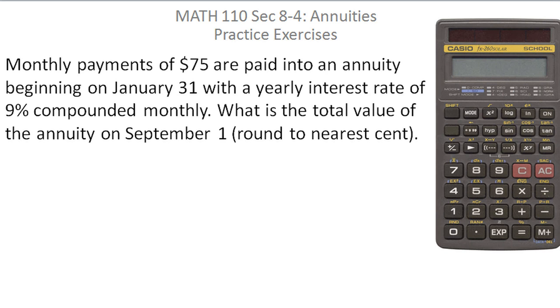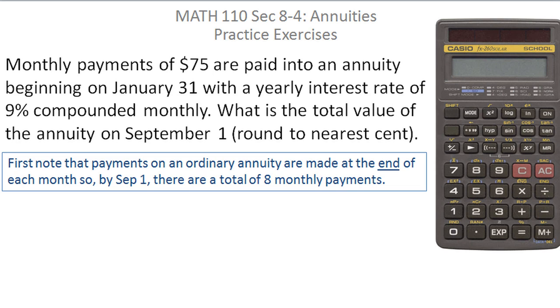Now, a couple of notes. First of all, payments on an ordinary annuity are always made at the end of each month. So by September 1st there are a total of 8 monthly payments. Now you have to count that right or you're going to miss this problem. So even if you have to count on your fingers.